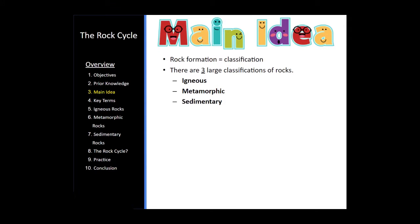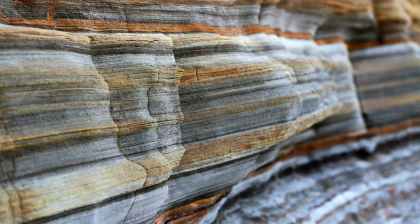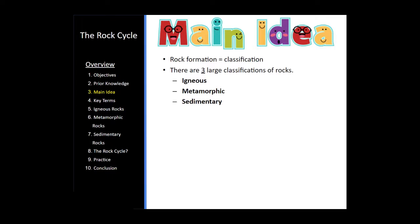So the main idea is basically there are three large classifications of rocks: igneous, metamorphic, and sedimentary rocks. These are typically classified by how they're formed. Rock formation is a great way to classify any type of rock that we find on the surface of the Earth. Because any rock that you would find is created in one of these three ways.